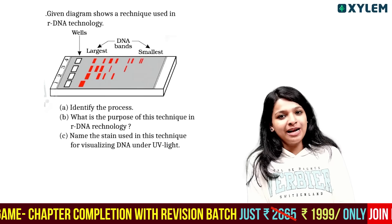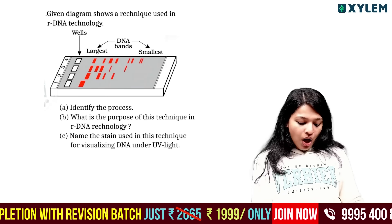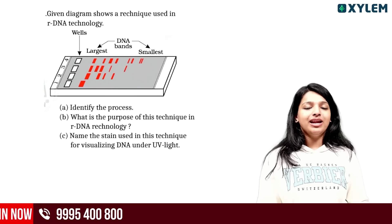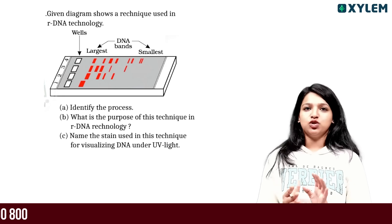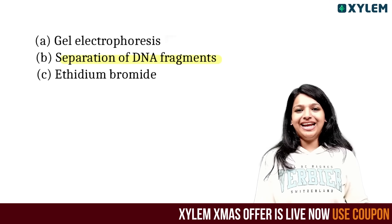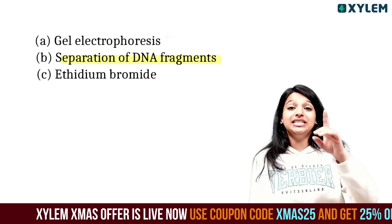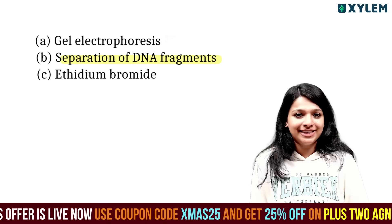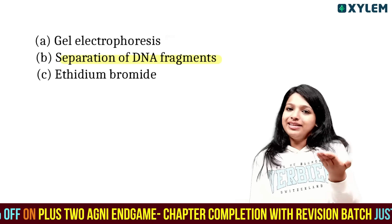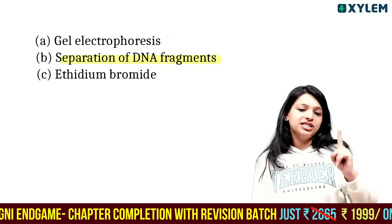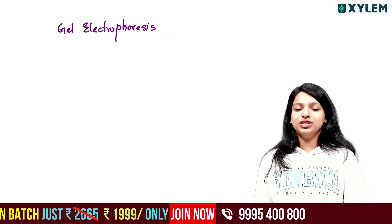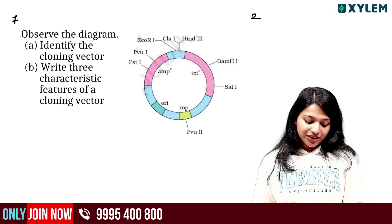Identify the process. What is the purpose and name the stain used in this technique for visualizing DNA under UV light. The process is gel electrophoresis, used in rDNA technology for separation of DNA fragments. We use the gel electrophoresis technique. The stain used is ethidium bromide - under UV light it shows the brightest orange color.